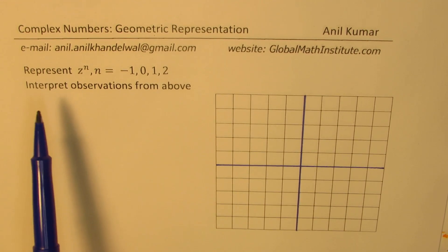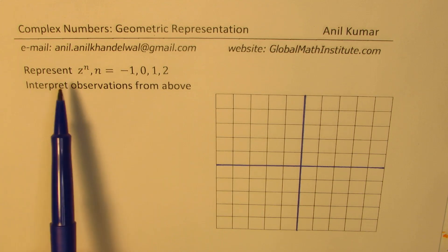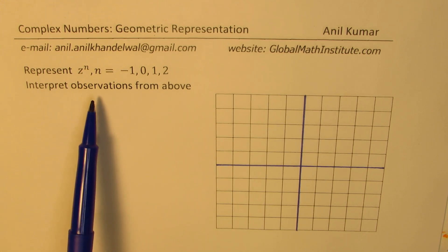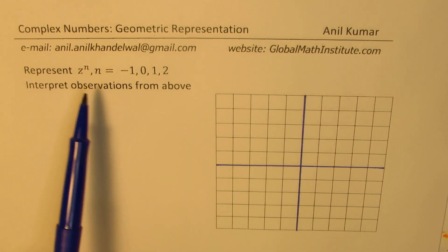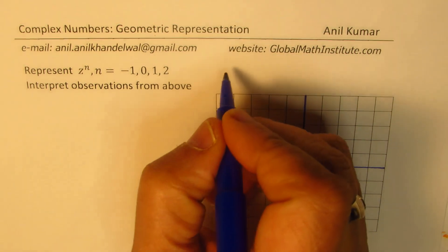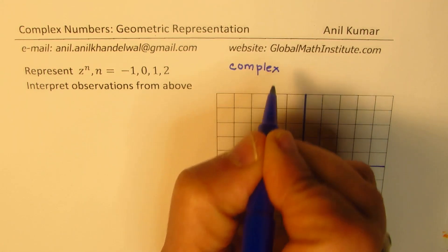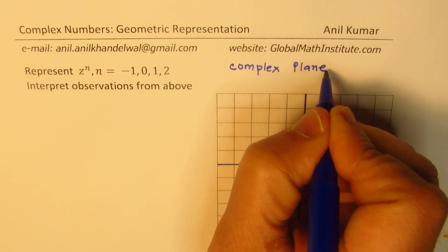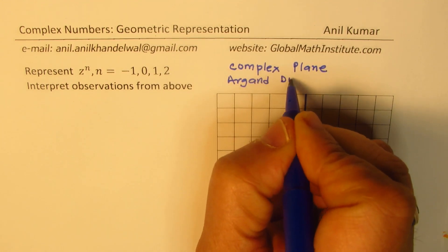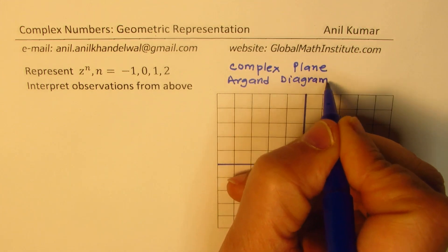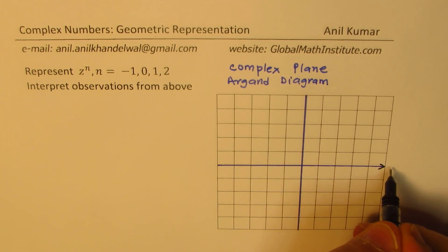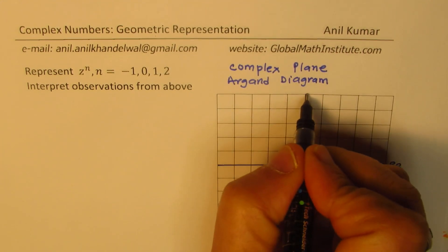Here is a very interesting example. We need to represent a complex number z to the power of n, where n equals minus 1, 0, 1, and 2. We have to interpret the observations as we represent the powers of a complex number. So we have a complex plane here, which we also call an Argand diagram. On the complex plane, we have a real axis and an imaginary axis.